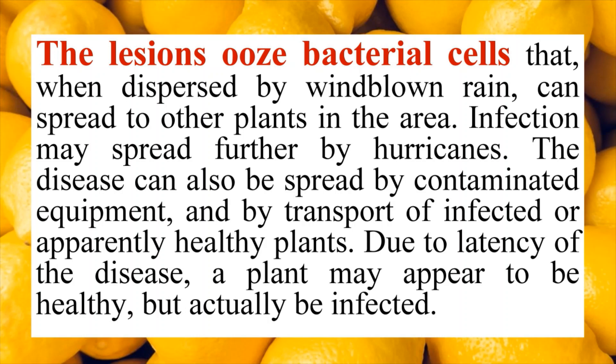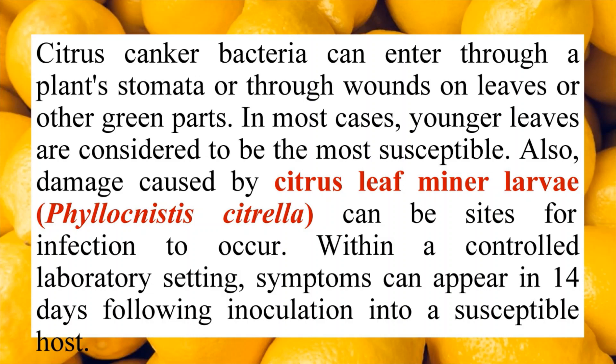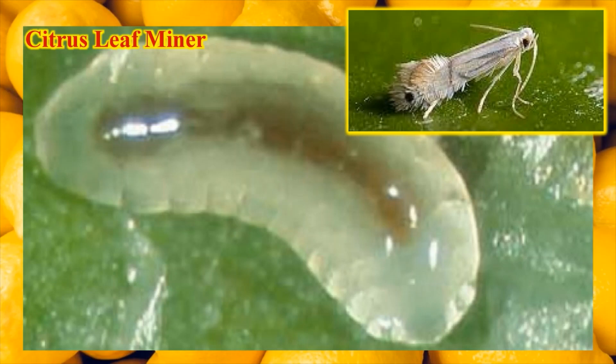The bacterial cells are dispersed by wind and rain, and they are also spread by humans. Even the equipment used in the cultivation of citrus plants is responsible for transferring the bacterium from infected plants to healthy plants. The bacterium can enter through stomata and through wounds of the leaves and other parts of the plant. One important carrier of this bacterium is the leaf miner larvae, Phyllocnistis citrella — the larvae of this insect carry the bacteria from infected plants to uninfected or healthy plants.